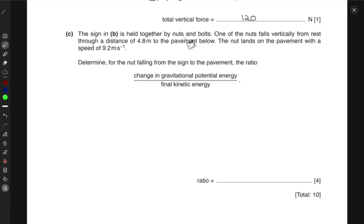Next, the sign in part B is held together by nuts and bolts. One of the nuts falls vertically from rest through a distance of 4.8 meters. So it's falling 4.8 meters and it's covering this length 4.8 meters when it falls. The nut lands on the pavement with the speed 9.2 meters per second. So before it hits, the nut hits the pavement, its speed is 9.2 meters per second. For the nut falling from the sign to the pavement, determine the ratio of change in gravitational potential energy to the final kinetic energy.